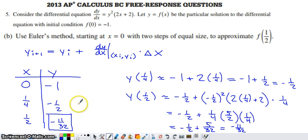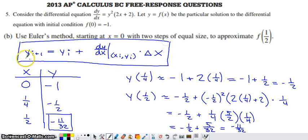In part B, they ask us to use Euler's method. They want us to start at x equals zero and use two steps of equal size to figure out an approximation for f(1/2). To do this, you're going to need to know the algorithm for Euler's method, which is right here. We are going to generate a new y value by taking the previous y value and adding to it the slope of the tangent line at the previous ordered pair times the distance between the x values we're using.